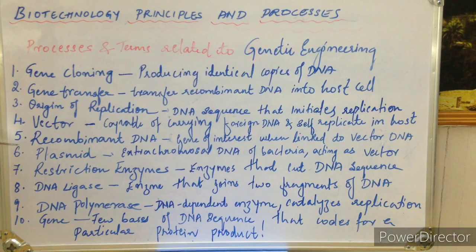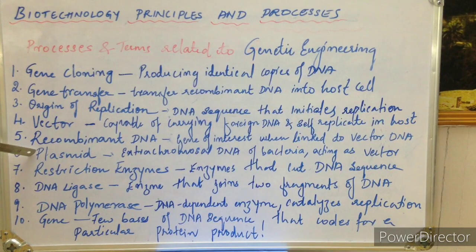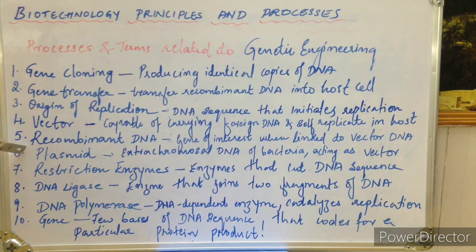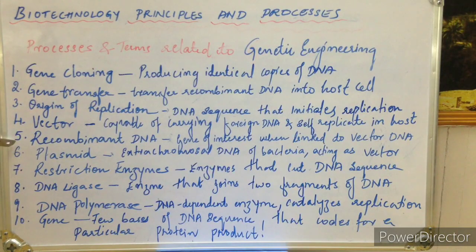Next is plasmid. Plasmids are a type of vector. They are extra-chromosomal DNA found in bacteria — small, circular, double-stranded DNA that replicates autonomously, segregated from the genomic chromosomal DNA. Plasmids produce some antibiotic resistance properties and are extensively used in recombinant DNA technology as vectors to carry the gene of interest into the host organism.